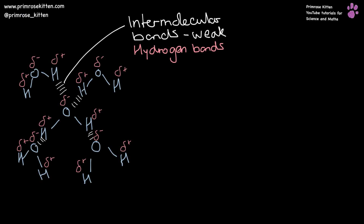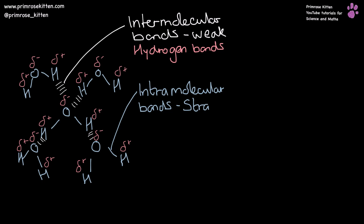In the case of water, which has a large number of special properties, the intermolecular bonds are hydrogen bonds, which also have a number of special properties. The bonds between the hydrogen and the oxygen within a water molecule are the intramolecular bonds, and these are very, very strong. The fact that there are weak bonds between molecules, but strong bonds within molecules, is the important factor that leads to the properties of simple covalent compounds.